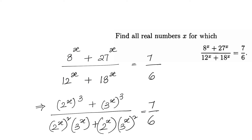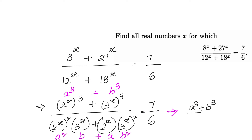We observe this is of the form (a³ + b³) / (a²b + ab²), where a = 2^x and b = 3^x. To simplify, we multiply the denominator by 3, giving 3a²b + 3ab², so that we can apply the sum-of-cubes formula a³ + b³ = (a+b)(a²−ab+b²).